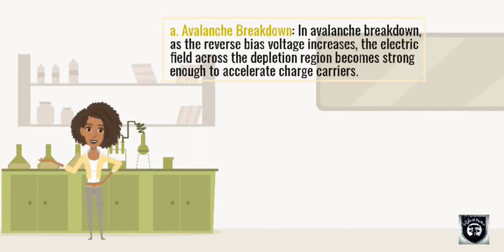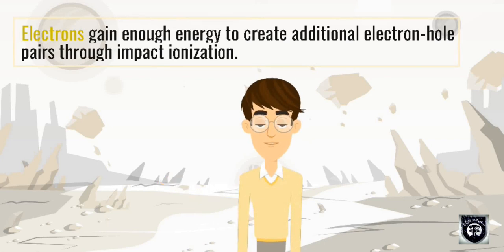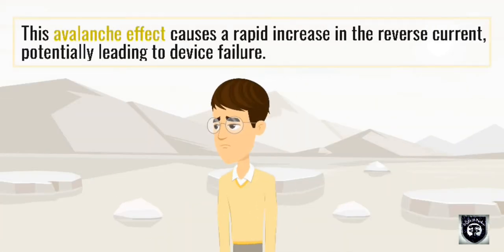Avalanche breakdown: In avalanche breakdown, as the reverse bias voltage increases, the electric field across the depletion region becomes strong enough to accelerate charge carriers. Electrons gain enough energy to create additional electron-hole pairs through impact ionization. This avalanche effect causes a rapid increase in the reverse current, potentially leading to device failure.